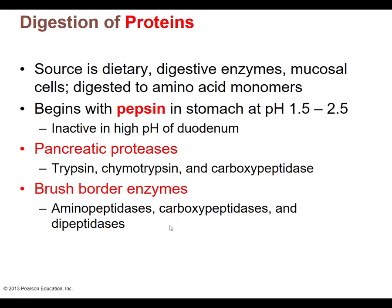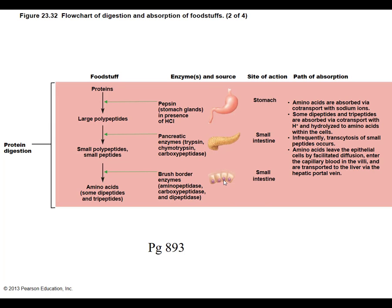Trypsin and the pancreatic proteases do not need a low pH — they prefer a closer to neutral or slightly alkaline pH, which matches the fluids coming from the pancreas. So pepsin requires the low pH found in the stomach, while the other enzymes prefer higher or neutral pH. Referring again to page 893: no proteins are broken down until the stomach; pepsin acts there first, then pancreatic enzymes, and finally brush border enzymes further break all proteins down.